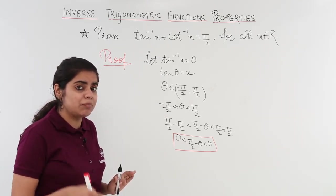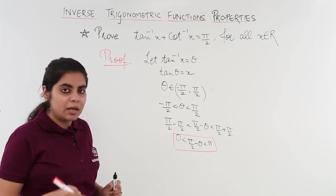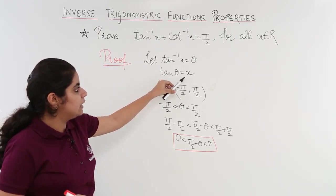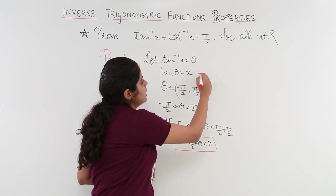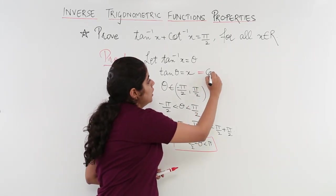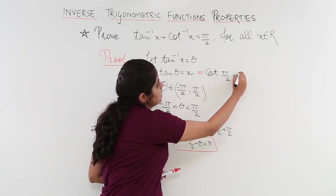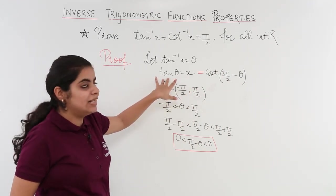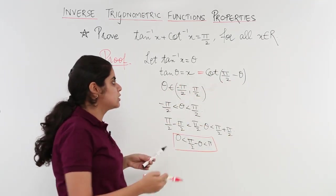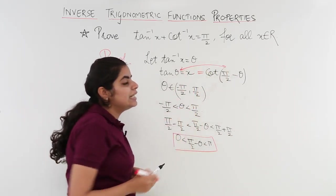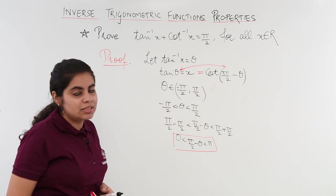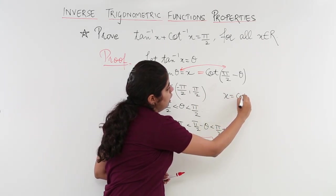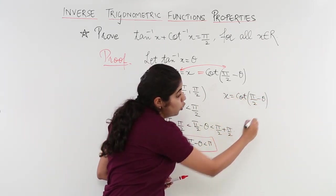I am computing pi by 2 minus theta because it will be used later. Since tan theta equals x, one more thing I can write is: cot of pi by 2 minus theta is equal to x. This is because tan theta is basically equal to cot of 90 minus theta — these two are equivalent from prior knowledge.